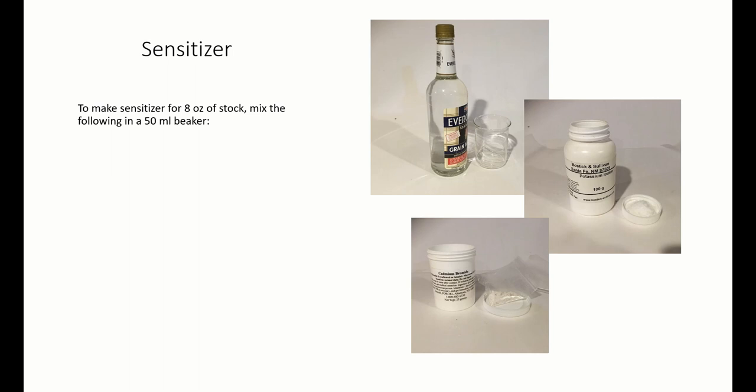The sensitizer. To make the sensitizer for 8 ounces of stock, mix the following in a 50 milliliter beaker: 2 milliliters of distilled water, 1 gram of potassium iodide, and 3 quarters of a gram of cadmium bromide.